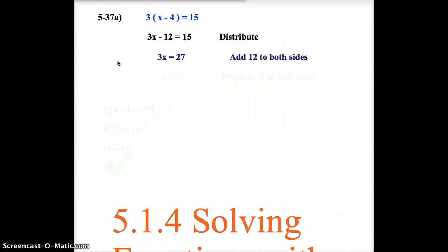So, we're left with 3x equals 27. Now, x is being multiplied by 3. So, the inverse of that would be to divide both sides by 3. And when we do that, we get x equals 9.